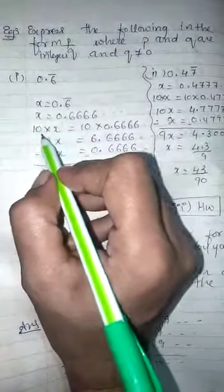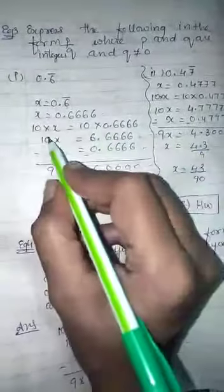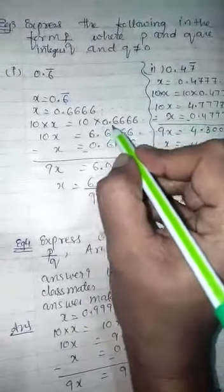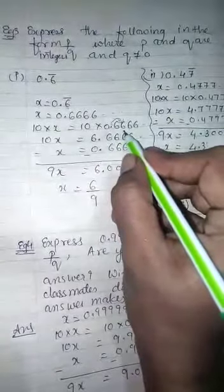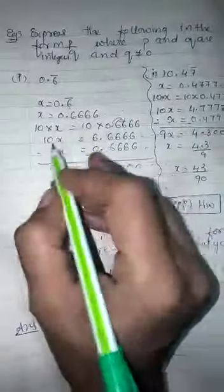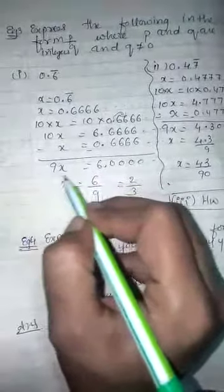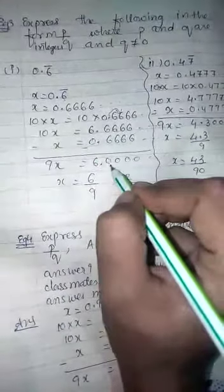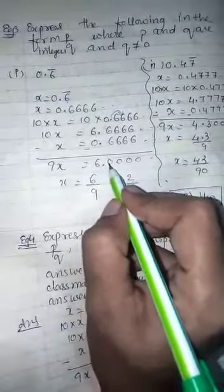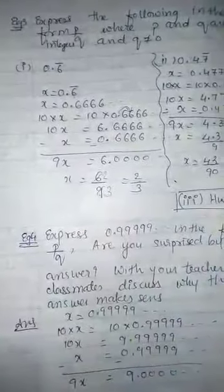Here, only one number — 6 — is repeating, so multiply 10 on both sides. 10X equals 10 × 0.666..., and when we multiply 0.666... by 10, the decimal moves one unit to the right, giving 6.666... Below this, write X equals 0.666... and subtract: 10X minus X equals 9X. Subtracting gives 6.0, which is 6. So 9X = 6, meaning X equals 6 upon 9, which simplifies to 2 upon 3.